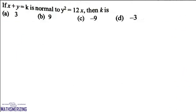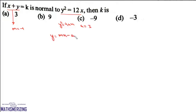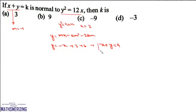Question: If x + y = k is normal to y² = 12x, find the value of k. The slope of the line is -1, and for y² = 4ax we have a = 3. Using the normal equation y = mx - am³ - 2am with m = -1: y = -x + 3(−1)³ · (−1) ... simplifying gives y = -x + 3 + 6, so x + y = 9. Therefore k = 9, which is option (b).